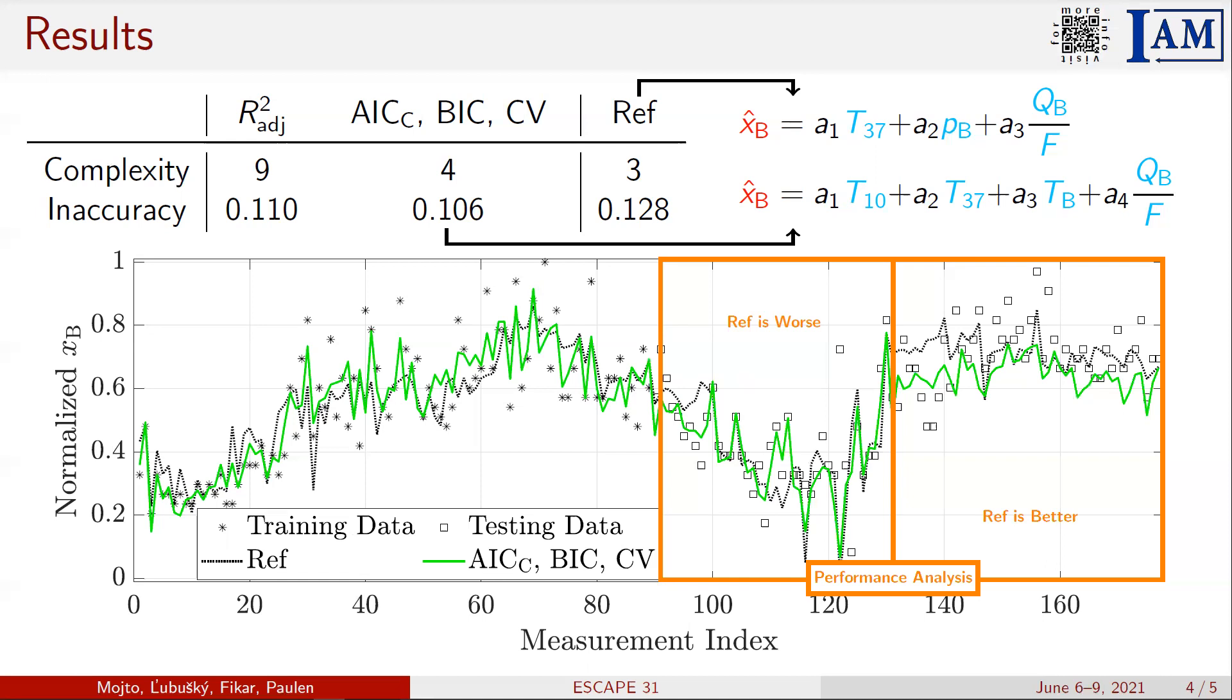Therefore, we conclude that the optimal structure of the inferential sensor varies in time due to changing operating conditions within the depropanizer column. The possible remedy represents the bias correction, updating the inferential sensor according to the actual measurement of the desired variable.